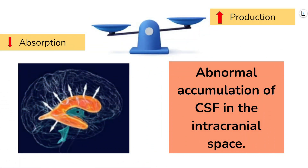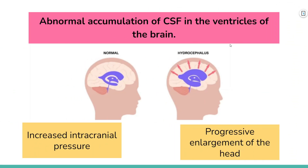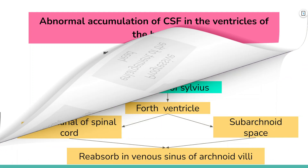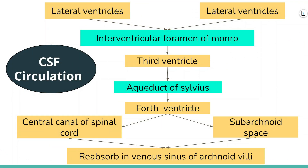Hydrocephalus is an abnormal accumulation of CSF in the intracranial space. There is an imbalance between either CSF production or clearance. This causes increased intracranial pressure inside the skull, which further causes progressive enlargement of the head. The normal amount of CSF is about 150 ml.